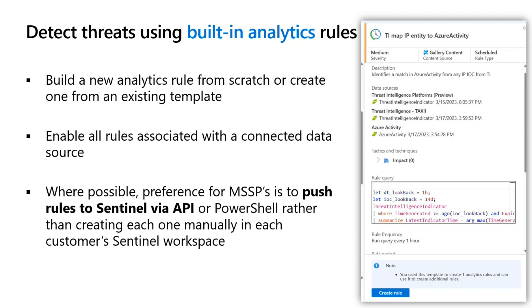The most efficient way to do this is directly from the connector — it will list any related rules associated with the connector, and you just enable it. If you are a security provider, you can also push rules to Sentinel using an API or PowerShell rather than doing this manually in each customer's Sentinel workspace. When using API or PowerShell, you first have to export the rules to JSON before you push them and enable them in your customer environments.